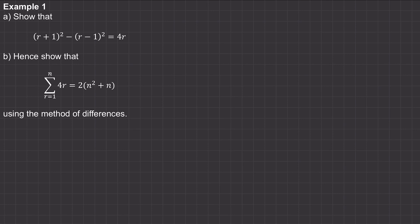In this video, I'm going to show you how to find the sum of a series using what's called the method of differences. In example one, we've been asked to show that the left-hand side of this expression is equal to the right-hand side. So we'll start with example a: we have r plus one squared, which is r squared plus two r plus one, minus r minus one squared, which is r squared minus two r plus one.